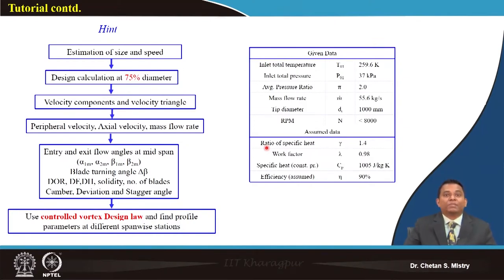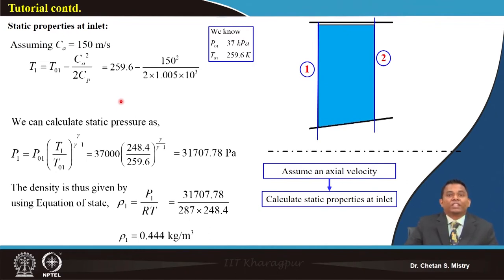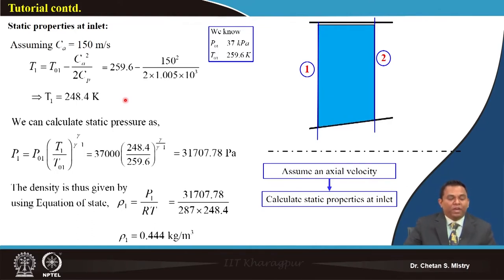For entry conditions we need entry dimensions, entry density, axial velocity, and peripheral speed. Assuming axial entry, Ca equals C1. Assuming axial velocity of 150 m/s gives an entry static temperature of 248.4 K. From the known entry pressure and temperature we can calculate the static entry pressure as 31.70 kPa.